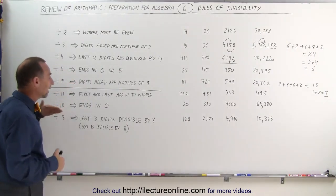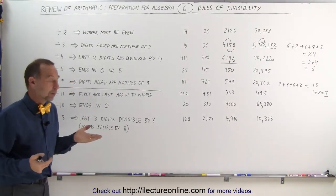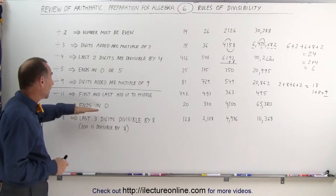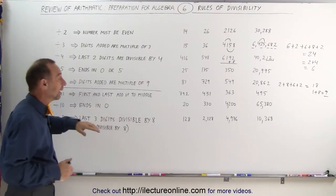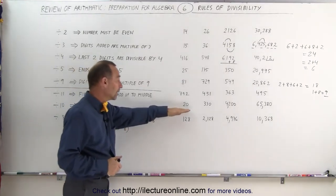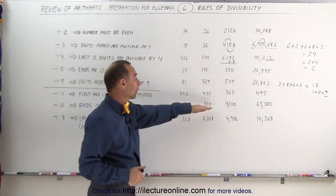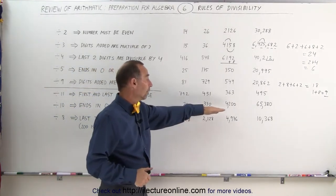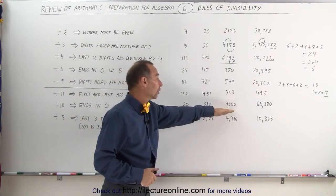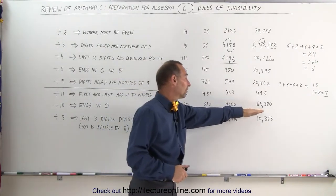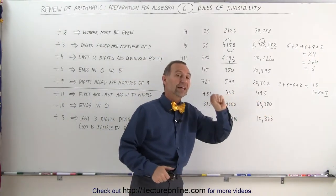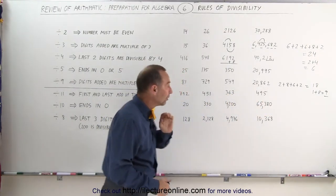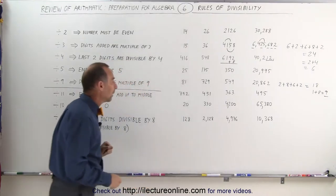Divisibility by 10 is very straightforward. As long as the number ends in a 0, it can be divided by 10. For example: 20, 330, 4,200, 65,380 — as long as they end in 0, the number is divisible by 10.